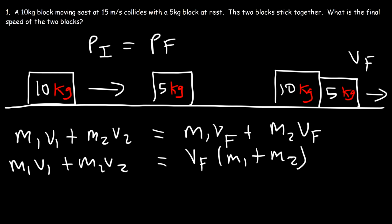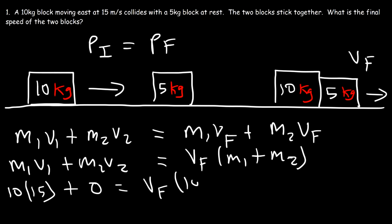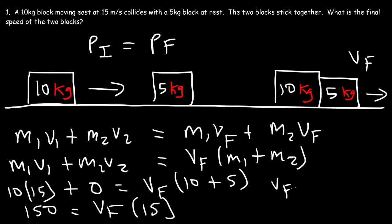Now let's plug in the values. The mass of the first block is 10 kg, moving at 15 meters per second. The second block is at rest, so it has no momentum. That equals v final times the sum of the two masses: 10 plus 5. Now 10 times 15 is 150, and 10 plus 5 is 15. So v final is 150 divided by 15, which is 10 meters per second.